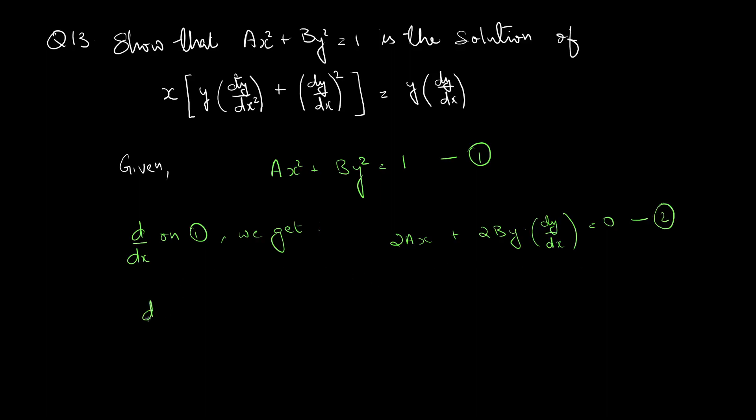Now, we will differentiate with respect to x on equation 2 again. 2A plus 2B into its product form y into d²y/dx², so it becomes dy/dx the whole square equal to 0.